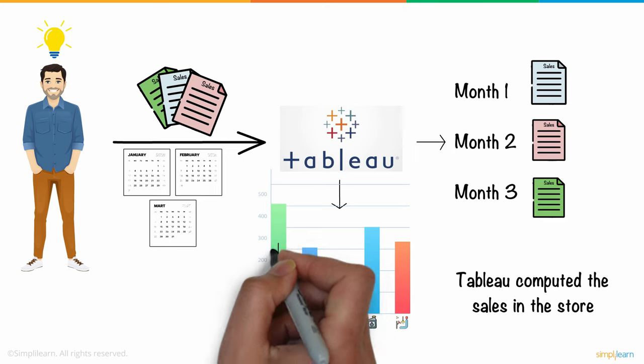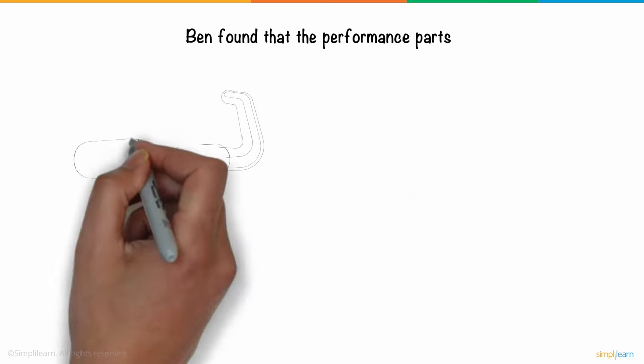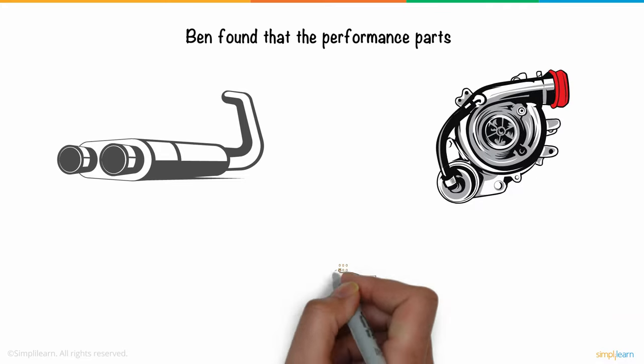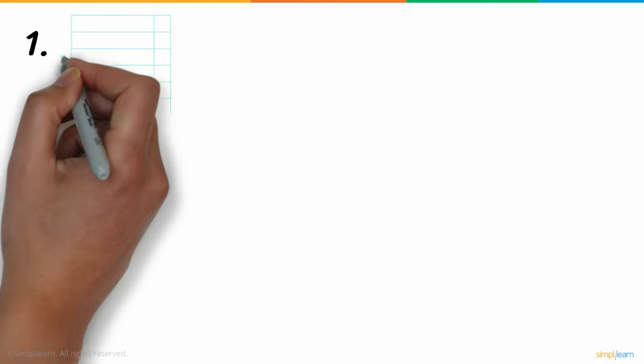Now Ben clearly understood the products that outperformed the sales charts and the products that did not have much demand. Let us elaborate a little. Ben found that the performance parts like sports exhaust, turbochargers, and engine management systems were selling well.